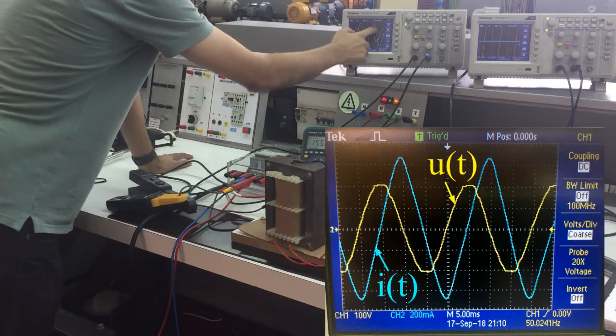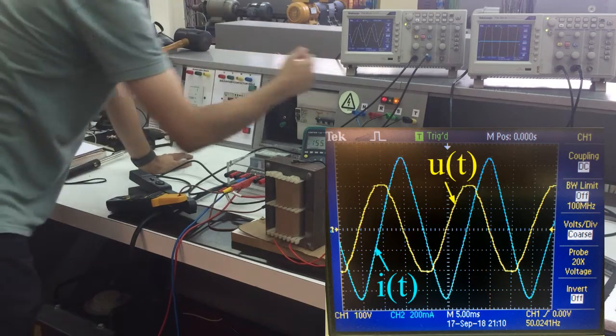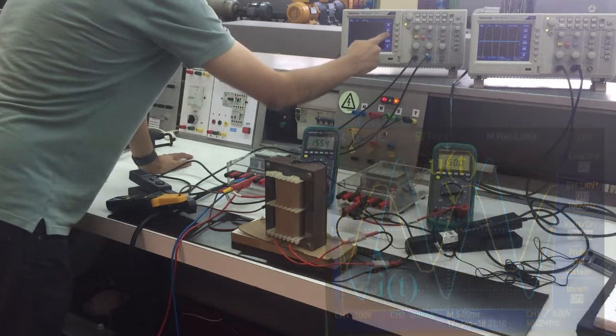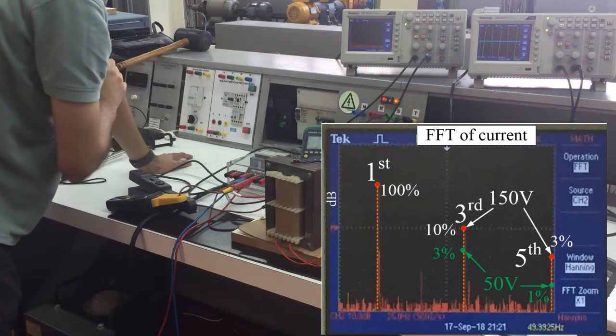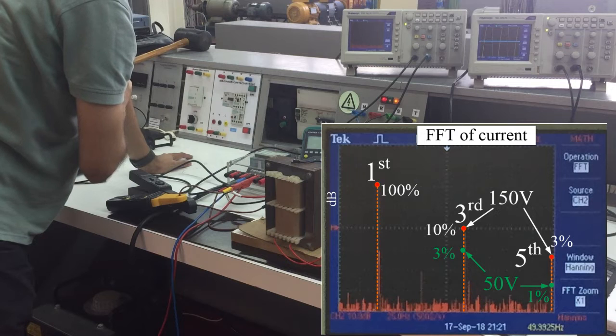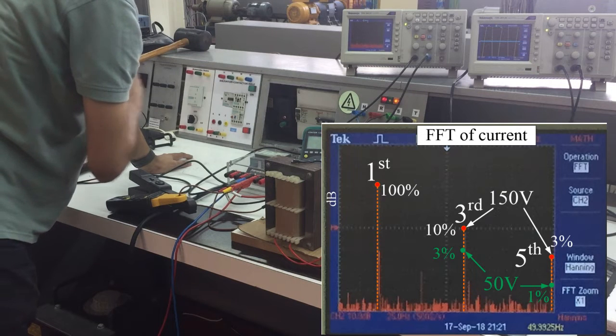If you look at its fast Fourier transformation, you will see that the third and fifth harmonics are much higher than before. This means that your magnetic circuit is now starting to go to the saturation.